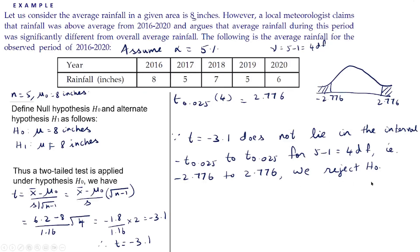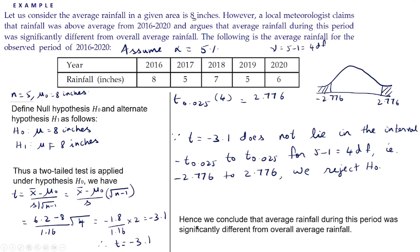Since we reject H₀, there is sufficient evidence to support the alternate hypothesis H₁, which means the average rainfall during this period was significantly different from the overall average rainfall. Hence we conclude that the average rainfall during this period was significantly different from the overall average rainfall. This is the final result.